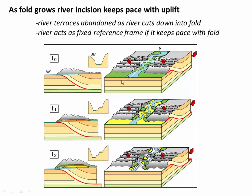Although we're using river terraces here, you could also use other geomorphic surfaces like lava flows or alluvial fans — anything where you know the initial geometry of the surface. In this example, we've got a river cutting across a growing fold. As the rocks are lifted up along the fault, the river is able to cut downwards, essentially keeping pace with the growing fold. As it does so and as the river migrates back and forth over time, it abandons river terraces along its flanks. Each of these terraces represents where the river was at some point in the past.